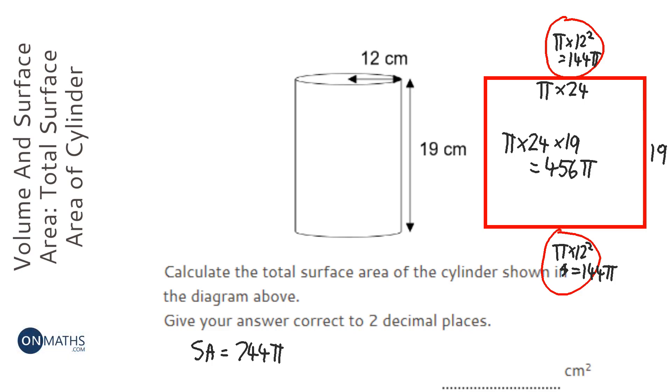So I'm just going to press the S to D button on the Casio calculator. All calculators have an equivalent. And it says it's 2337.3449 blah blah blah. So to two decimal places, it's going to be 2337.34 cm squared. Thank you.